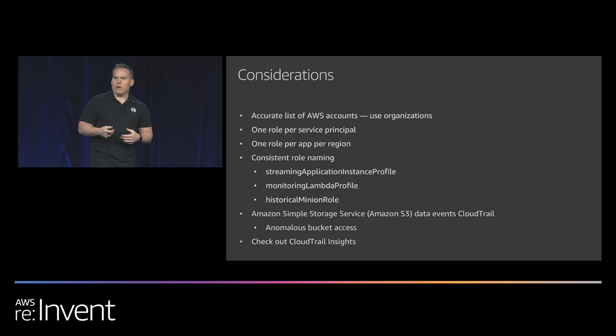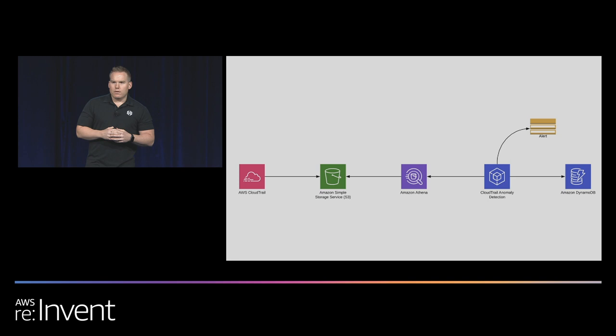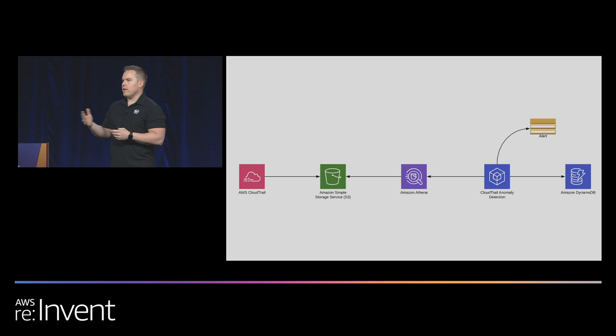Looking at the architecture, it's pretty simple. We're centralizing all CloudTrail to a single S3 bucket, utilizing Amazon Athena to do the querying and select distinct actions for that role in the given period we decide. We write those to Amazon DynamoDB, using the TTL feature to keep track of the burn-in period and automatically delete entries that are beyond that period. Those deleted entries become the anomalous calls if they're made again. Then we alert to SNS, and from SNS you can subscribe to a queue or do whatever you want.